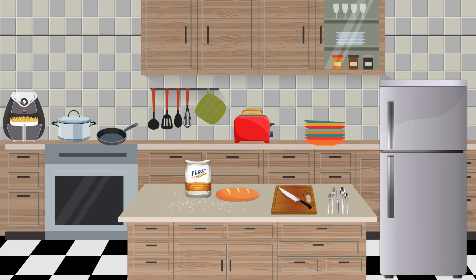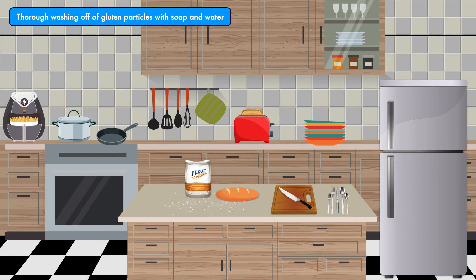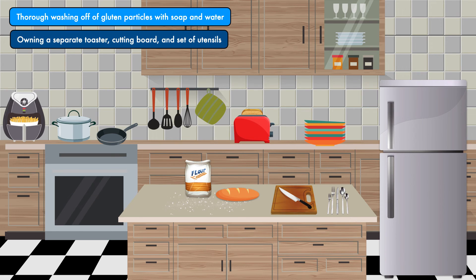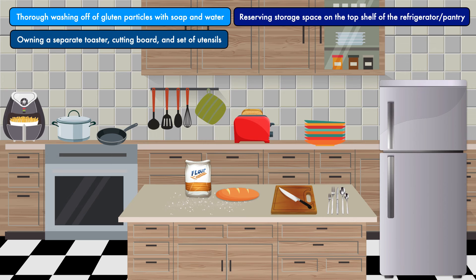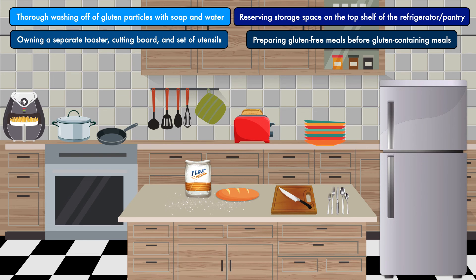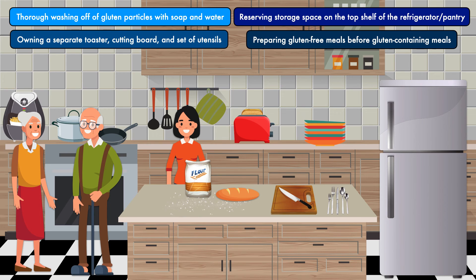People with celiac disease must take extra care to ensure that all surfaces are free of gluten, either through the thorough washing off of gluten particles with soap and water, owning a separate toaster, cutting board, and set of utensils, reserving storage space on the top shelf of the refrigerator and pantry, and preparing gluten-free meals before gluten-containing meals. Perhaps the most effective strategy is for the entire household to go gluten-free, even if it's just one person who is susceptible.